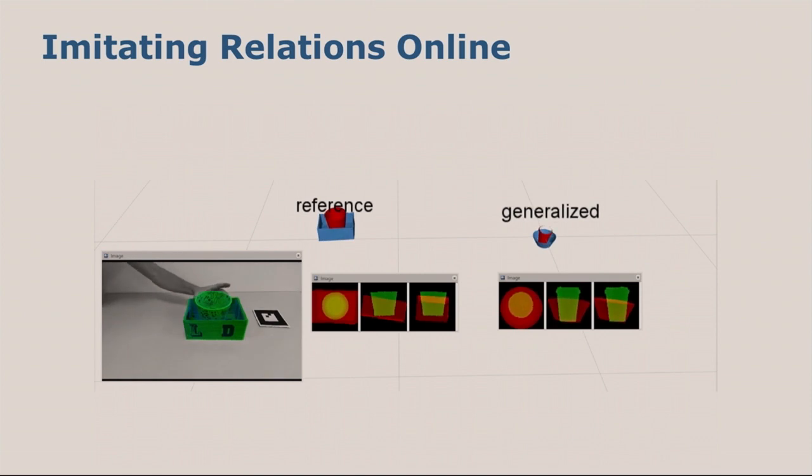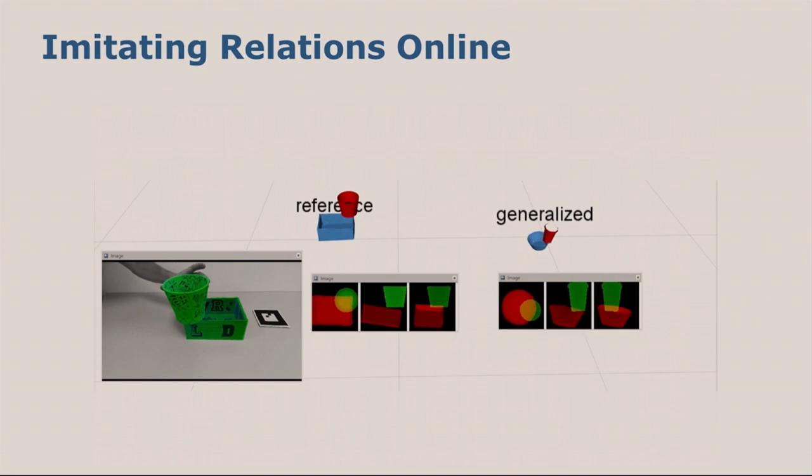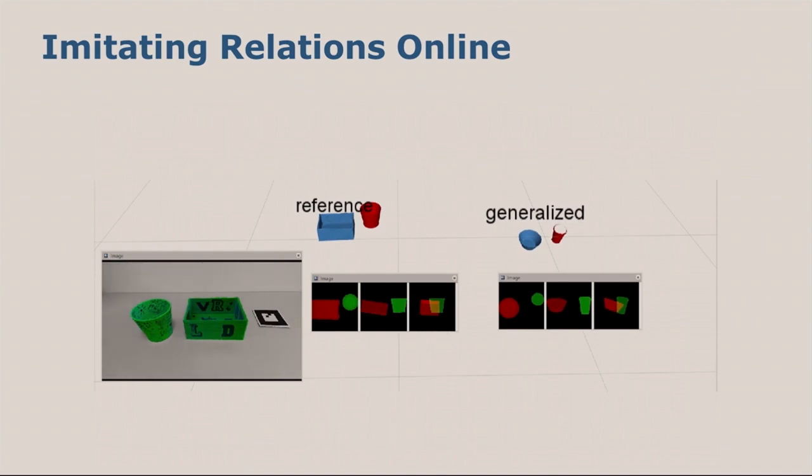Now we can evaluate this approach online. Here we use vision-based 6D pose estimation to obtain the transformation for the point clouds, which we then project to the depth images, which you see below, and feed through our network, compute the distance between the reference scene and the scene on the right, which is the generalized scene. As you can see, as we move the object on the left, the reference scene on the right, we successfully generalize the scene to these two new objects.